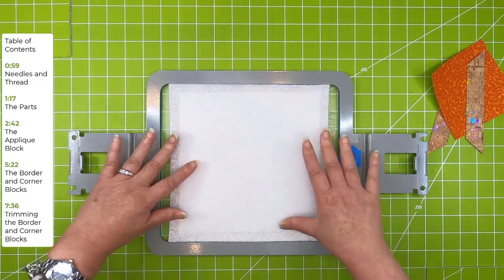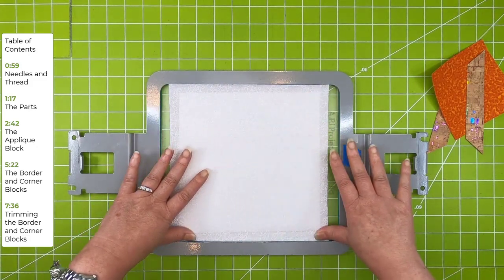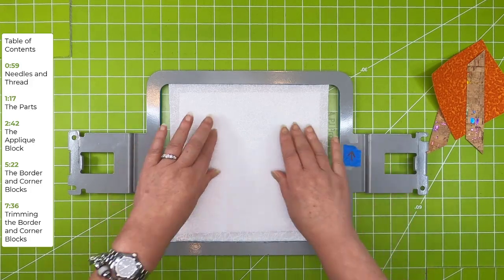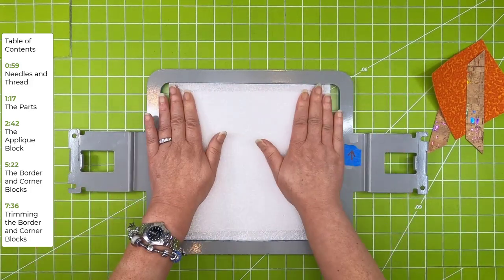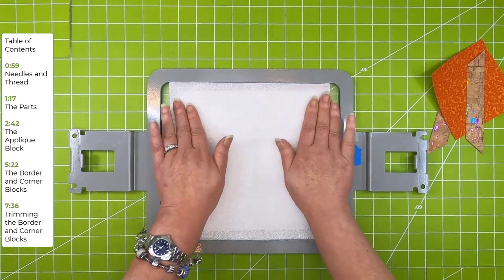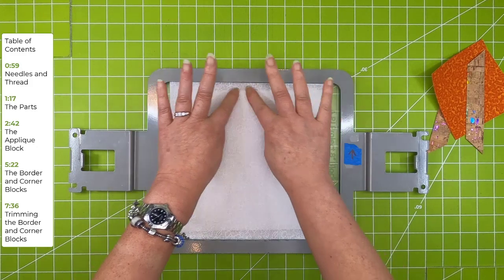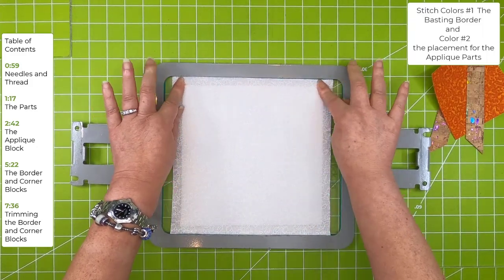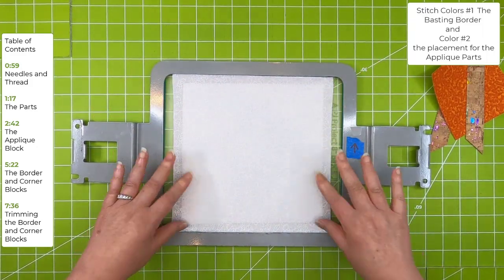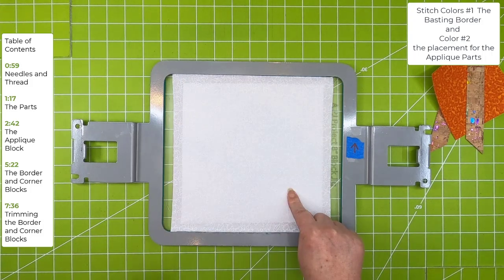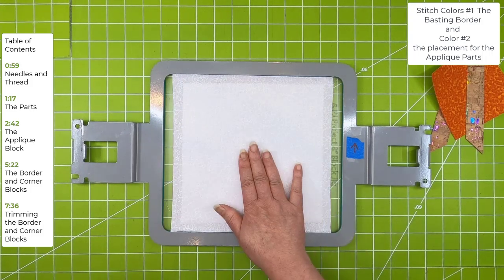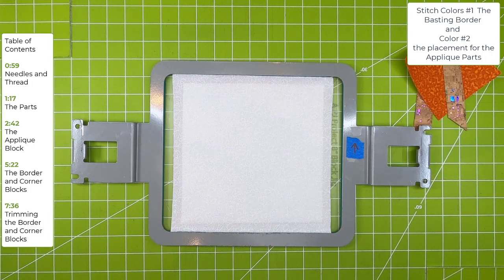If you're doing the all stitching blocks, you're probably going to want to make sure that you have fairly fresh tape to make sure that your block stays put. I'm having to press pretty hard because this is fairly well used tape. I am going to go stitch the basting border and the first color, which is going to be the placement stitch for my applique parts.